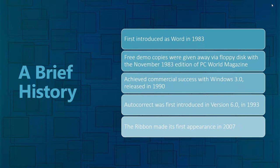Those floppy disk copies were included in the November 1983 edition of PC World magazine — one of the first times free software was given away that way. Anyone who had magazine subscriptions into the mid-2000s probably remembers that software giveaways continued for quite some time. Word didn't really achieve commercial success until Windows 3.0 was released in 1990, but once that happened, Microsoft Word took off.